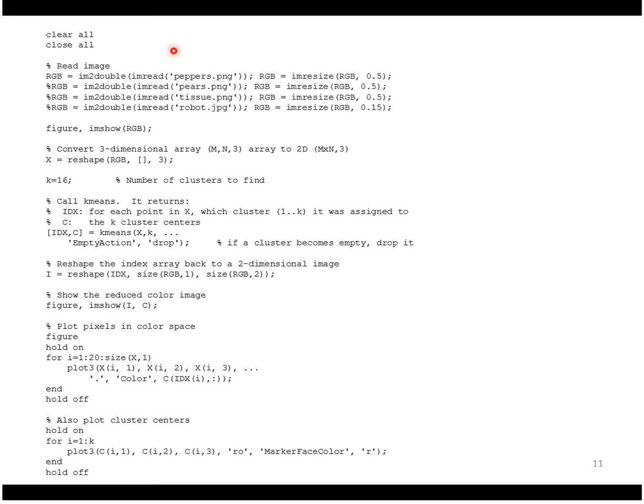Just to describe it, here we read in the image and convert to double, which means that each color value will be scaled from between zero to one. We're going to convert the three dimensional array of colors m by n by three to a two dimensional array using MATLAB's reshape function.